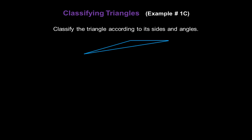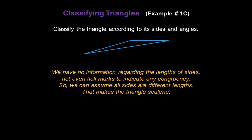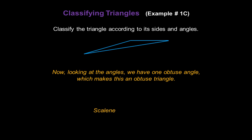Classify this triangle according to its sides and angles. Again, we have no information regarding the lengths of the sides — not even tick marks to indicate that anything is congruent — so we're going to assume all sides are different lengths, making this a scalene triangle. Looking at the angles, we see we have one obtuse angle, which makes this an obtuse triangle. So we have a scalene obtuse triangle.